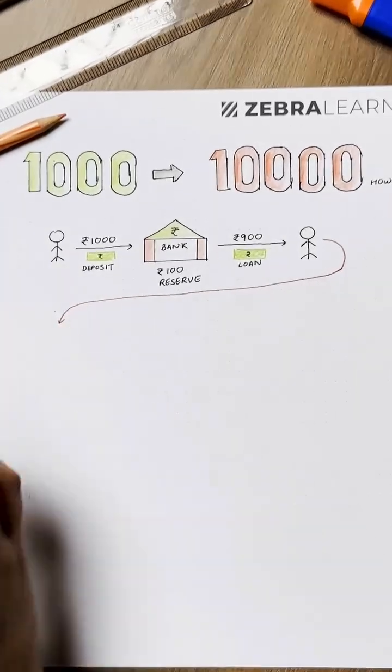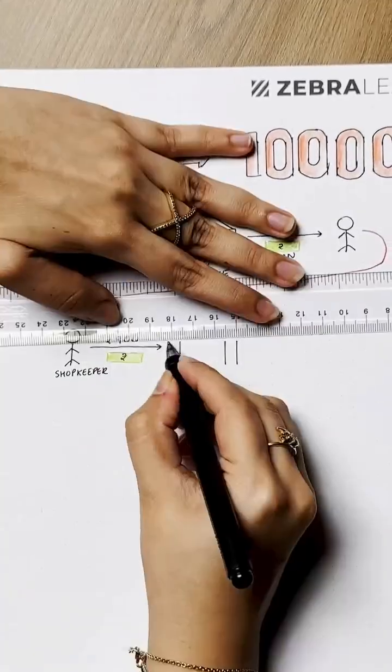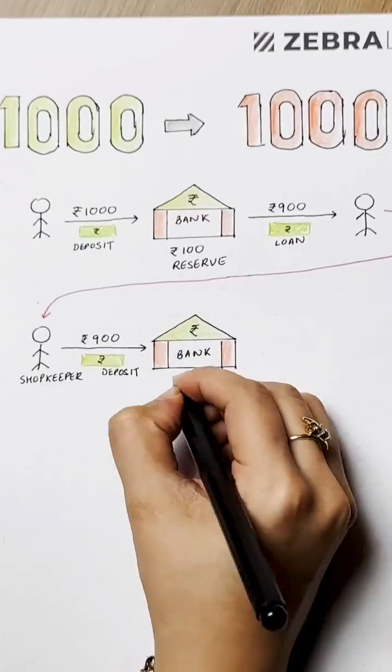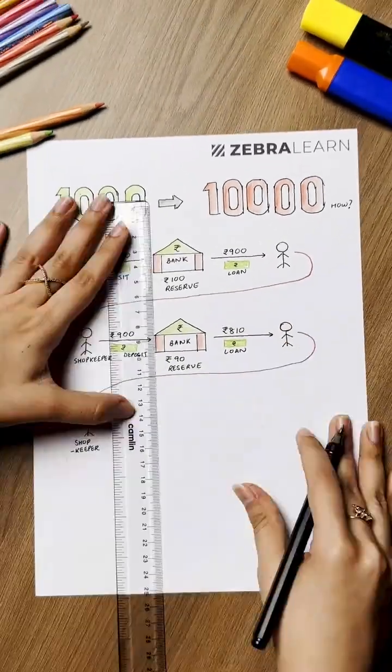This person spends 900 rupees at a shop. The shopkeeper deposits this 900 rupees into the bank. The bank again keeps 90 rupees as a reserve and loans out the rest, 810 rupees.